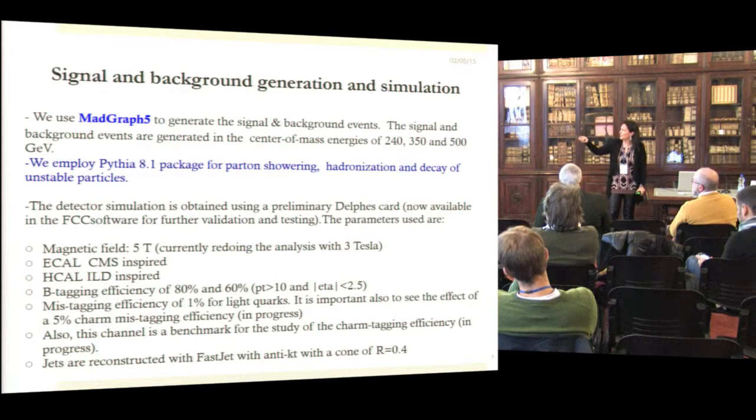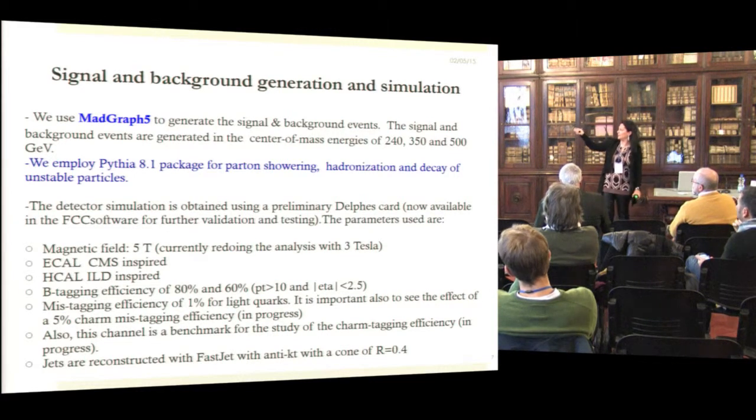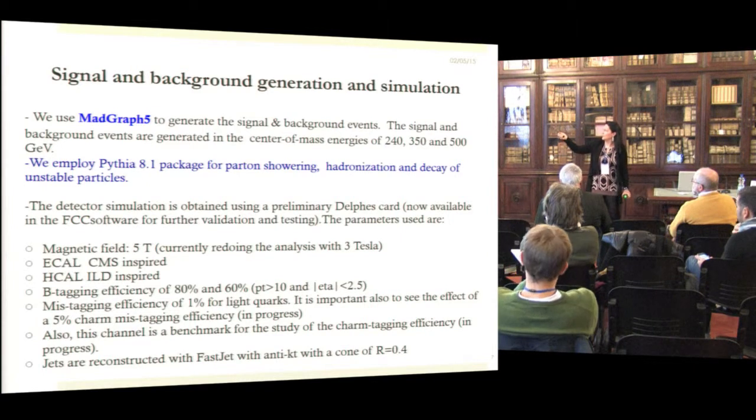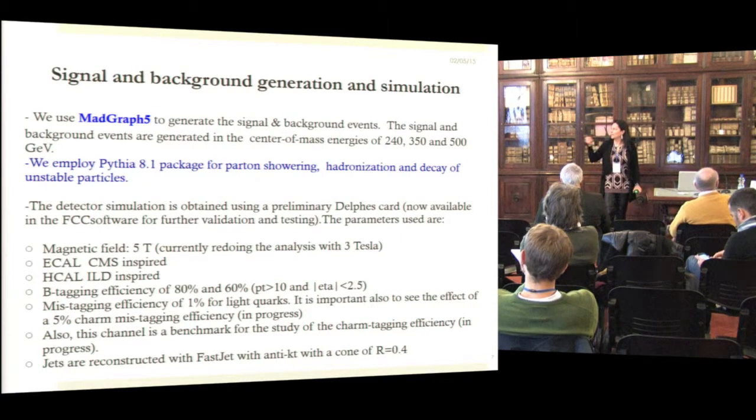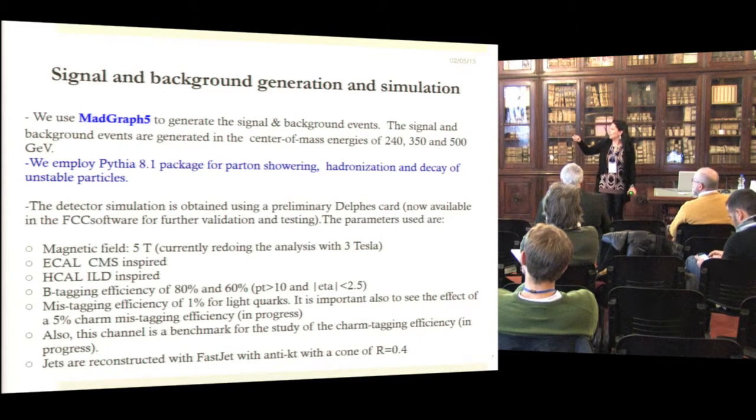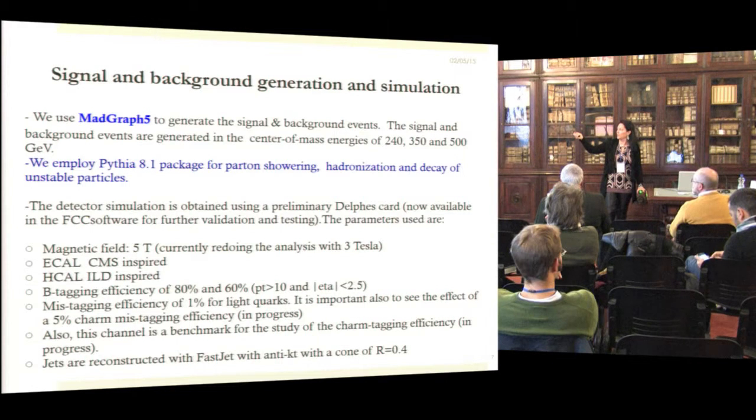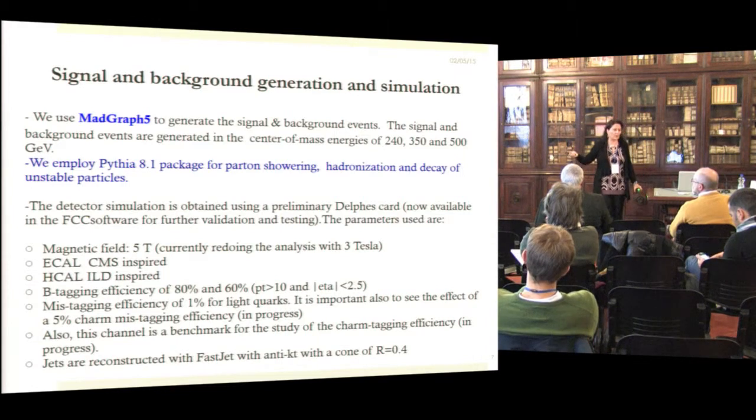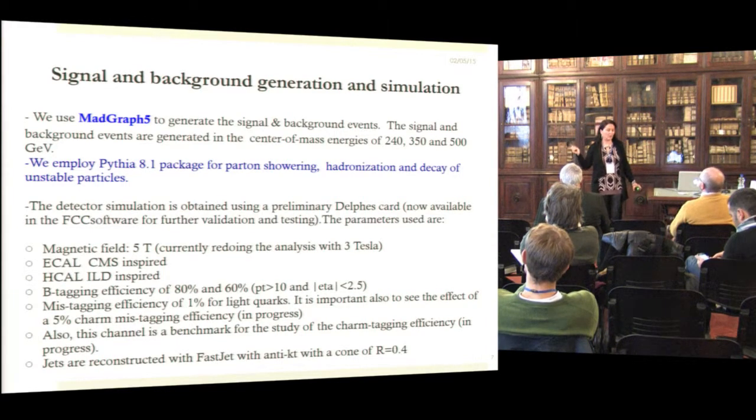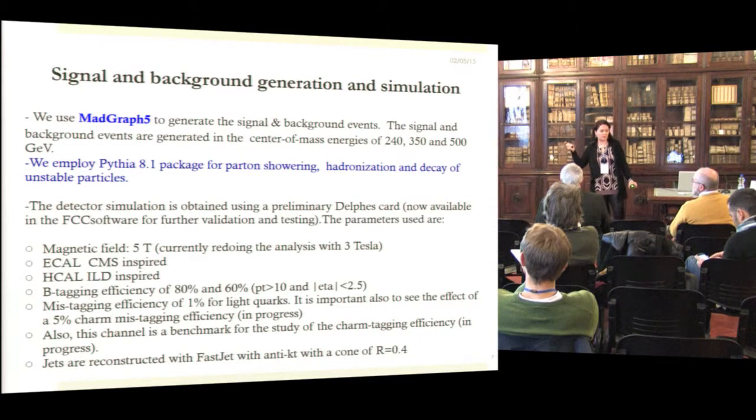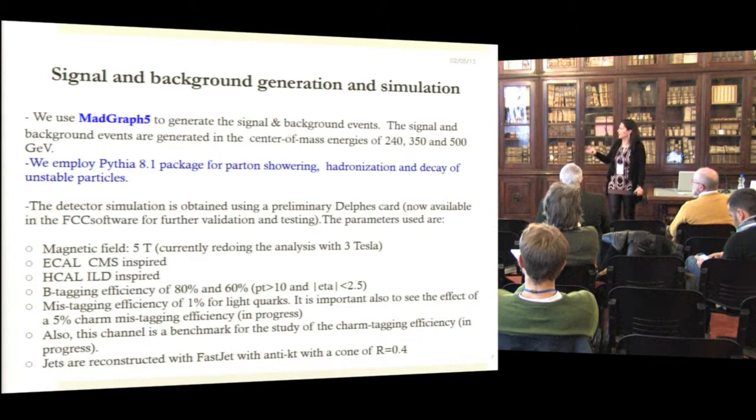At this moment the magnetic field was 5.5 Tesla and the analysis is being redone with 3 Tesla. The B-tagging efficiency was taken at 80% and 60% to try. There is some work in progress to actually use also a specific charm tagging efficiency that at the moment is not done, but it's important to see how much we need for that.